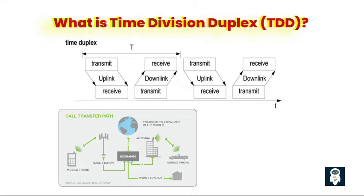What is time division duplex (TDD)? Time duplexing, also referred to as time division duplexing (TDD), is a duplexing technique employed in communication systems to enable bidirectional communication over a single frequency channel. Unlike frequency duplexing, which separates uplink and downlink transmissions by allocating different frequency bands, time duplexing achieves the separation by dividing the transmission time into distinct time slots. The available transmission time is divided into alternating time slots, with each slot dedicated to either uplink or downlink communication.